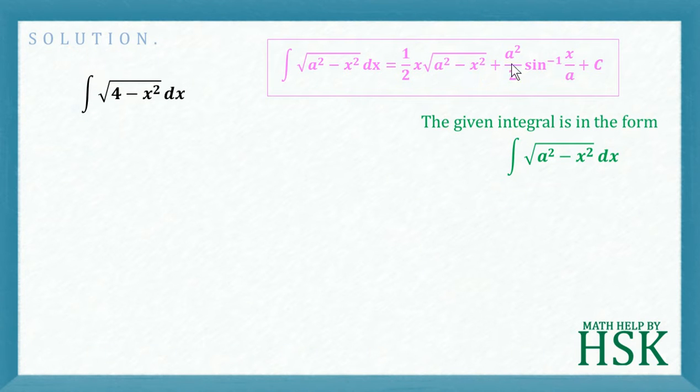Okay, so first of all I'm going to write 4 as 2 squared minus x squared, and then I'm going to apply this formula so we have no problem with the term of x.